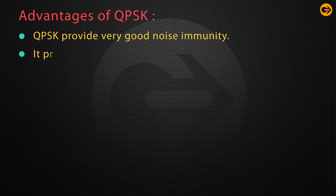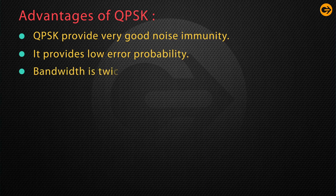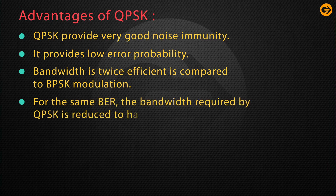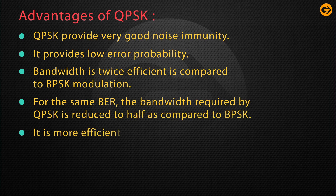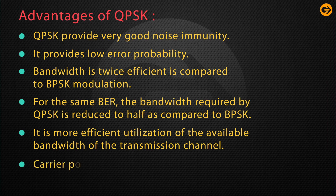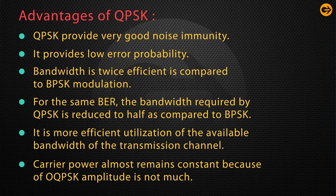QPSK provides very good noise immunity and low error probability. The bandwidth in QPSK is twice as efficient compared to BPSK modulation for the same bit error rate (BER). The bandwidth required by QPSK is reduced to half compared to BPSK, enabling more efficient utilization of the available transmission channel bandwidth. Additionally, the carrier power almost remains constant because the QPSK amplitude does not vary much.